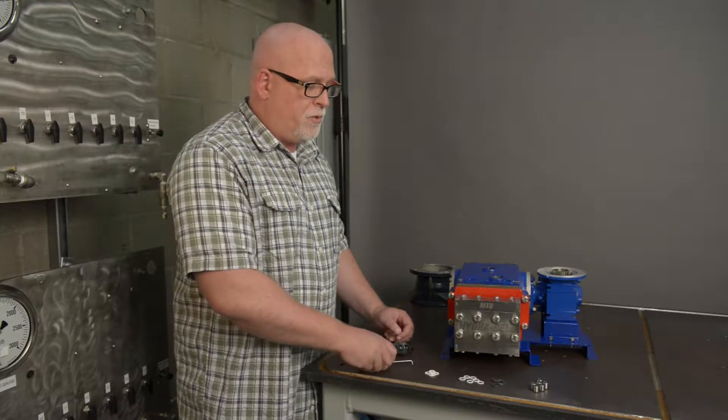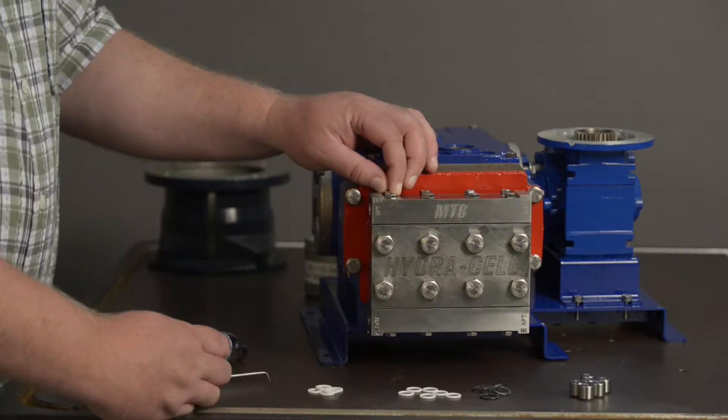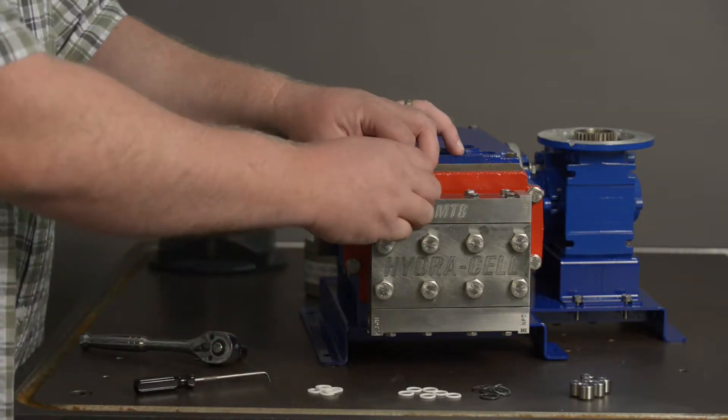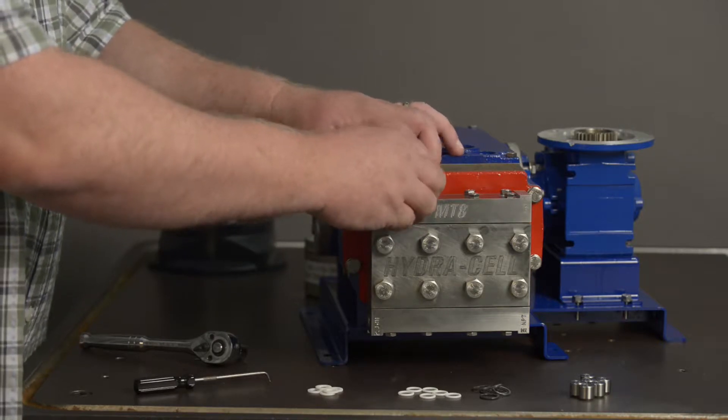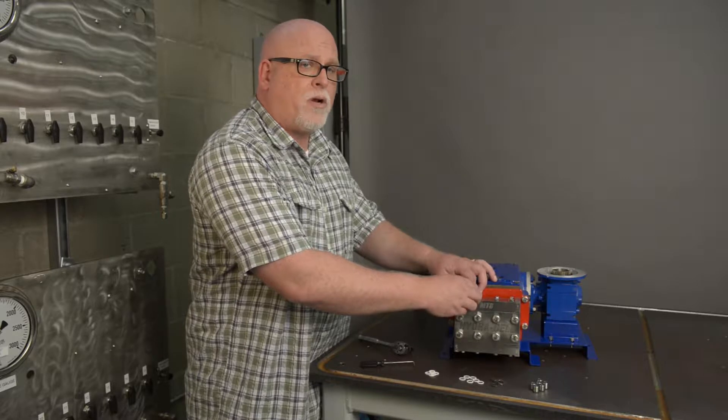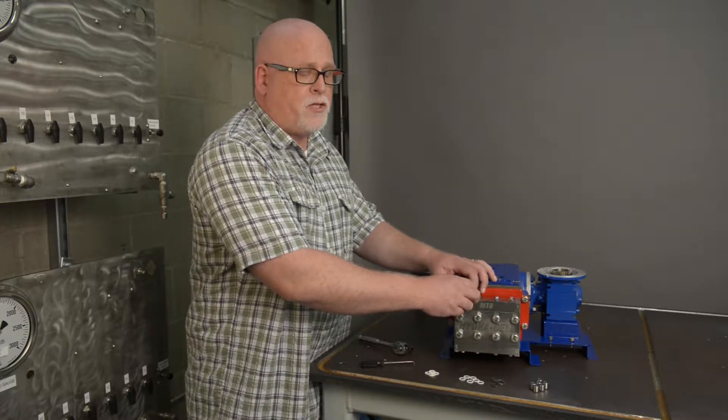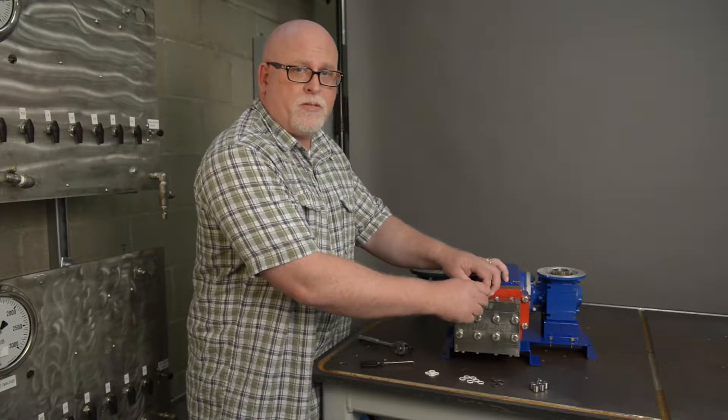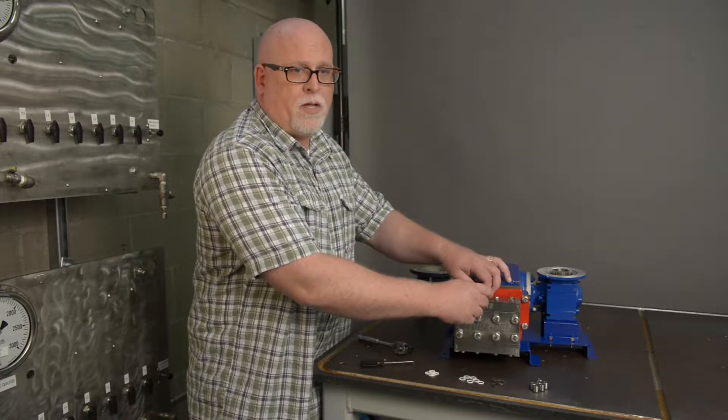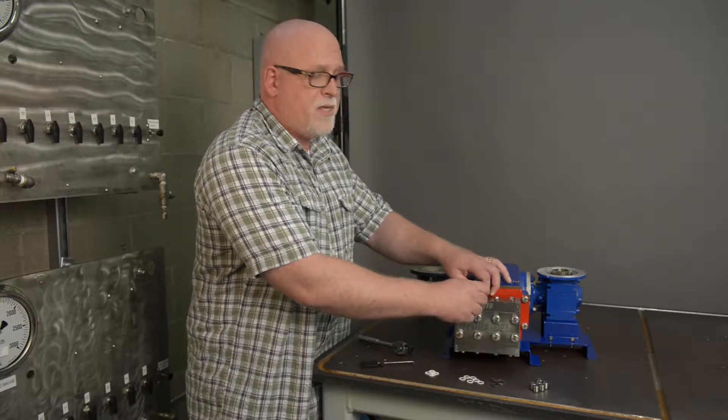So first things first, you'll use your 10 millimeter wrench to loosen the eight bolts in the top portion of the manifold. Now I've pre-loosened these just to aid in the speed of this. Normally these would be torqued per your instruction manual. So make sure that when you reassemble this that you torque these bolts properly and that is spelled out in your instruction manual that came with your new MT8 metering pump.